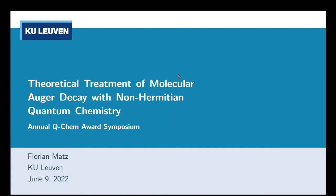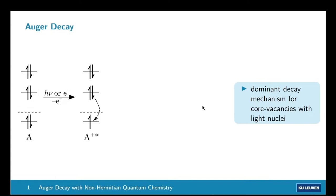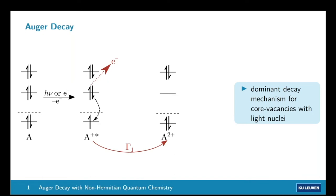Auger decay is a process happening in core-ionized or core-vacant states, usually with light nuclei. These states are highly excited versions of the corresponding cation and can decay via several pathways. In Auger decay, one valence electron refills the core hole and another valence electron is emitted into the ionization continuum — leading to a secondary ionization and usually a dication. This happens with a characteristic rate constant called the partial decay width, gamma.